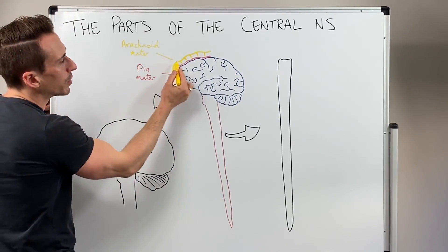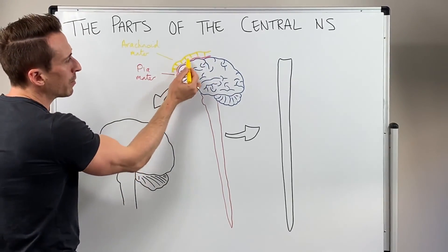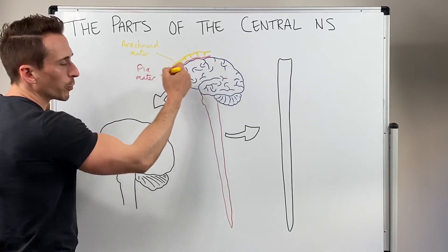Interestingly, below the arachnoid layer, but above the pia mater is where the cerebral spinal fluid floats through.